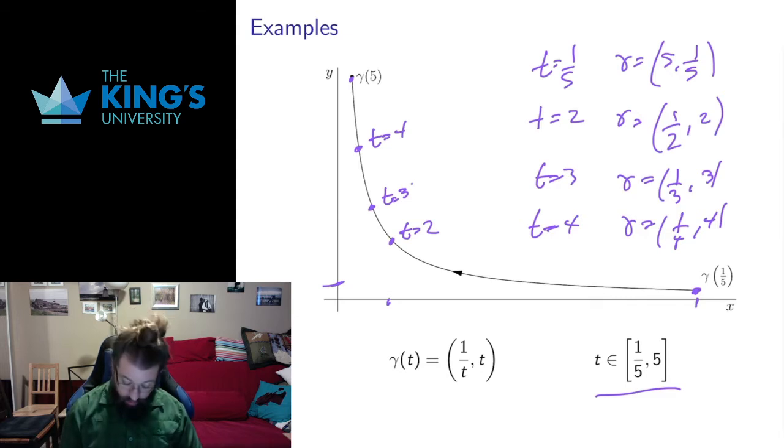And we see that we get motion along the curve for different values of t. Notice that t equals 1 is 1, 1, so it's sort of in here somewhere. Notice that I get all the way here from 1/5 to 1, but then things slow down. I get 2, 3, 4, 5.